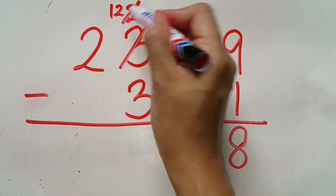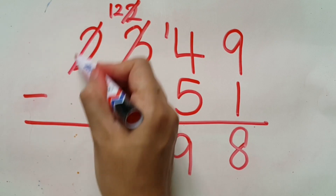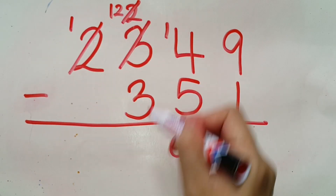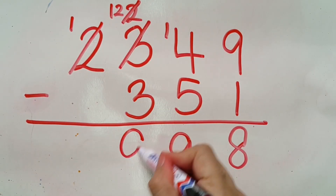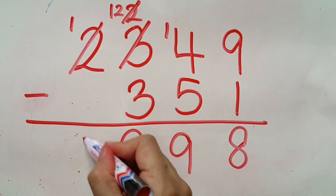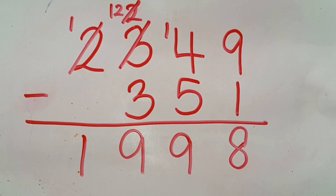Since we borrowed ten from the left, that digit becomes one. Twelve minus three will be nine, and one minus zero will be one. So the total will be one thousand nine hundred and ninety-eight.